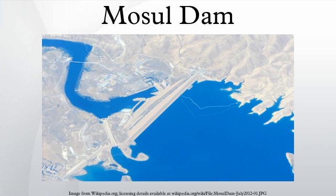Mosul Dam, or Chamburaka Dam, formerly known as Saddam Dam, is the largest dam in Iraq. It is located on the Tigris River in the western governorate of Nanawha, upstream of the city of Mosul.